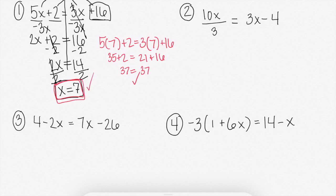Problem 2 looks slightly different. This time, I have my 10x over 3. So before I can do anything, I need to get rid of that so I don't have a fraction in there anymore. So to get rid of divide by 3, we're going to have to multiply by 3.